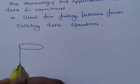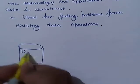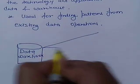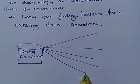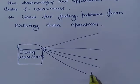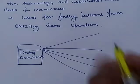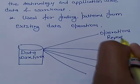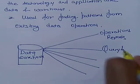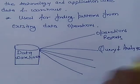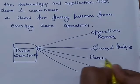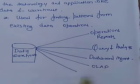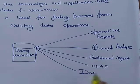Let us look at the Business Intelligence System with the help of a diagram. We have the data warehouse, and all these things are incorporated in it. Based on the previous operations, the Business Intelligence System finds out the ongoing pattern. Operation reports, query and analysis, dashboard management, online application processing, and data mining are all part of it.